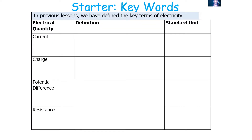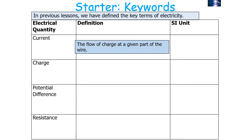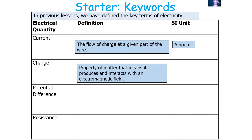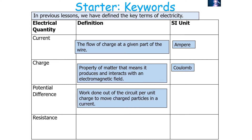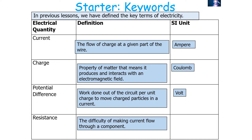In previous lessons we've defined the key terms of electricity — current, charge, potential difference, and resistance. Current is the flow of charge at any given point of a conductor and is measured in amperes. Charge is the property of matter that means it produces and interacts with an electromagnetic field, measured in coulombs. Potential difference is the work done per unit charge to move charge carriers in a current, measured in volts. Resistance is the difficulty of making current flow through a component, measured in ohms.